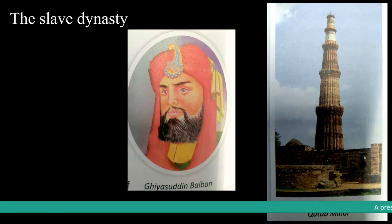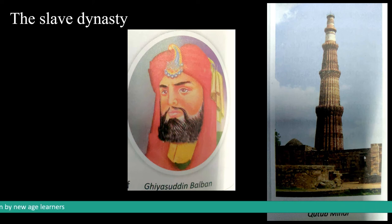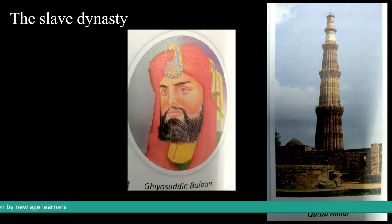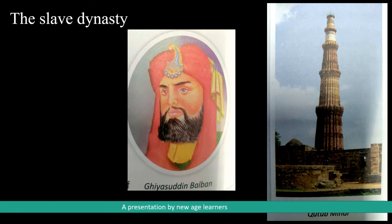Giyasuddin Balban ruled from 1266 to 1287 CE. Balban was a very powerful noble, and after becoming Sultan, he reorganized and strengthened the army. He led many campaigns against local rulers and defeated them. To settle colonies for Afghan soldiers, he cleared the jungles around Delhi, and by settling these colonies he also checked the Mewatis who hid in jungles and created problems. Balban also successfully guarded the north-western borders of his empire against Mongol raids. As Sultan, Balban adopted a blood and iron policy. He knew that during the 20-year rule of Nasiruddin the Chahalgani had become very strong and were jealous of his ascent, so after becoming Sultan he decided to crush their power — putting a few to death and banishing others to far-off places.